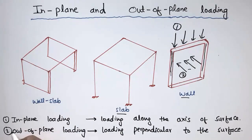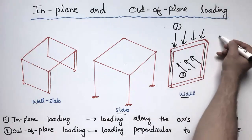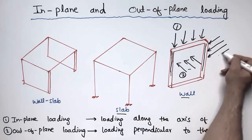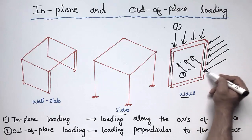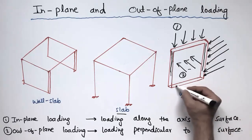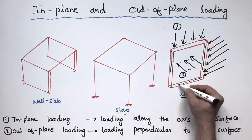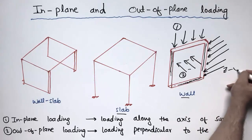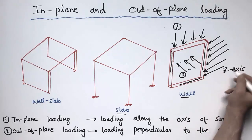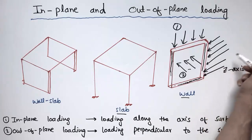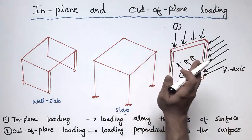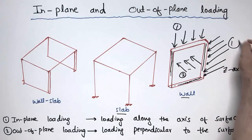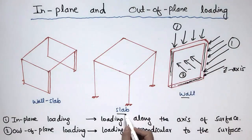Similarly, the load which is acting along this other axis of the wall — which is also a lateral load but is acting along the axis of the wall, which may be the X-axis or Z-axis — this load is also acting along the axis of the wall, not perpendicular to it. That's why it is also called in-plane loading.